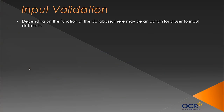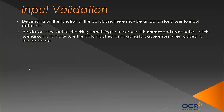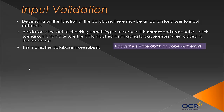Finally, let's look at input validation. Depending on the function of the database, there may be an option for a user to input data. Validation is the act of checking something to make sure it is correct and reasonable. In the context of databases, it makes sure the data inputted is not going to cause errors when added to the database. Validation makes the database more robust - robustness is the ability to cope with errors, a key term in this course. It makes it more robust because errors are removed at an early stage.